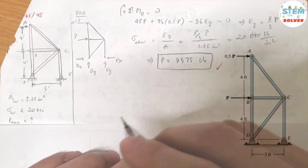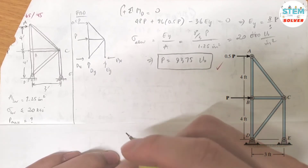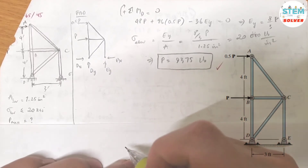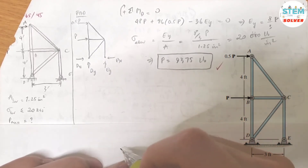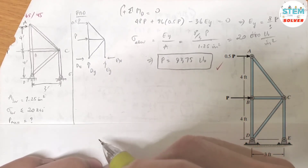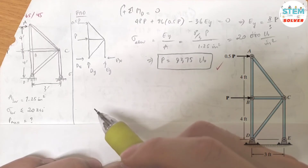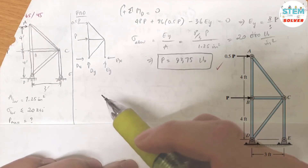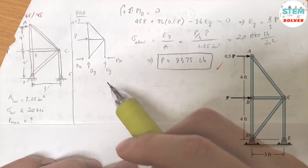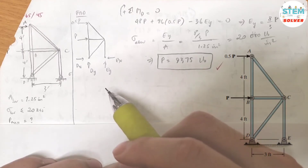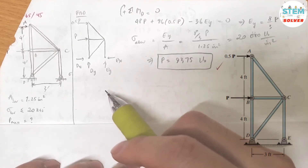So that is the maximum force you can apply to the truss in order to keep the normal stress in each member from exceeding 20 KSI.